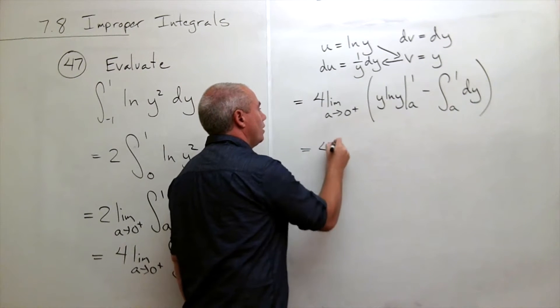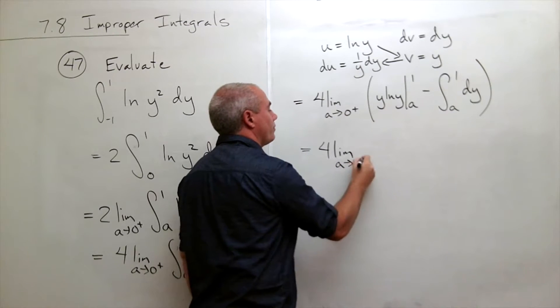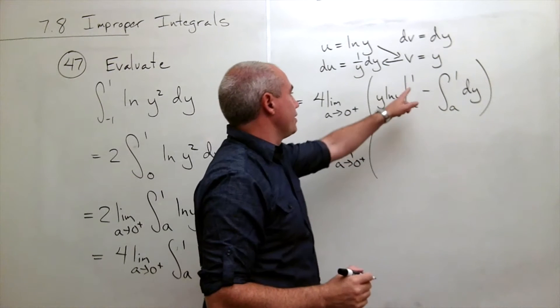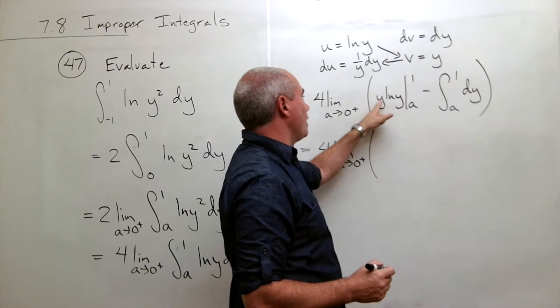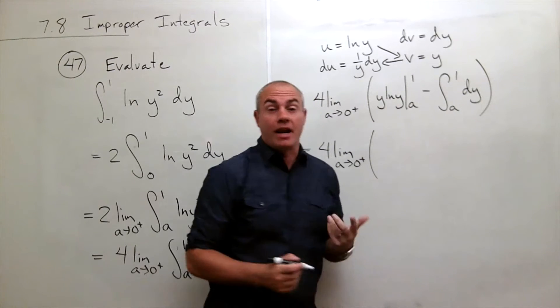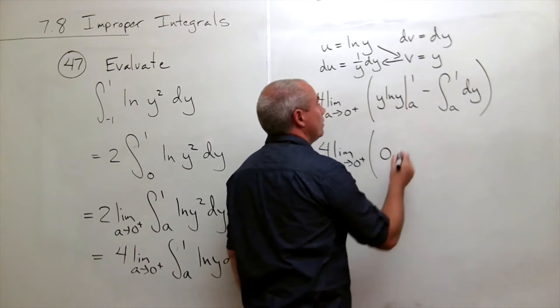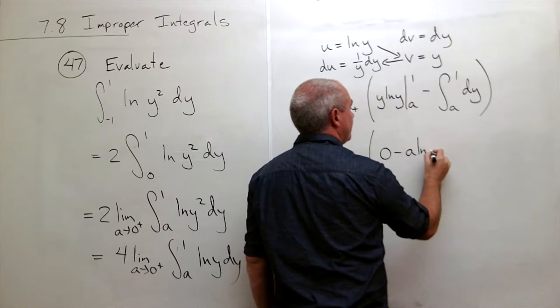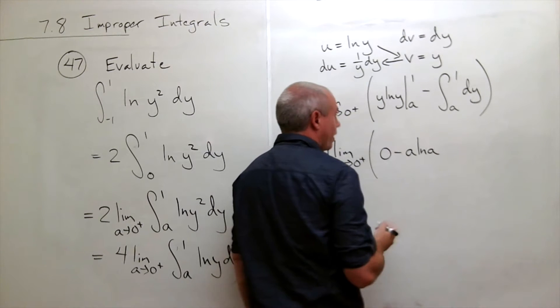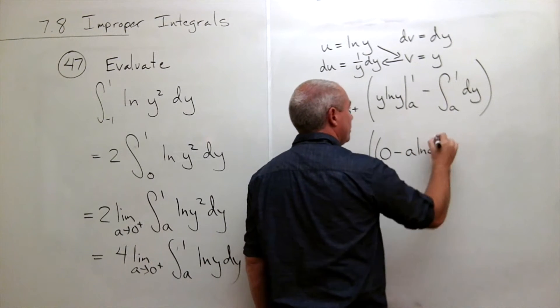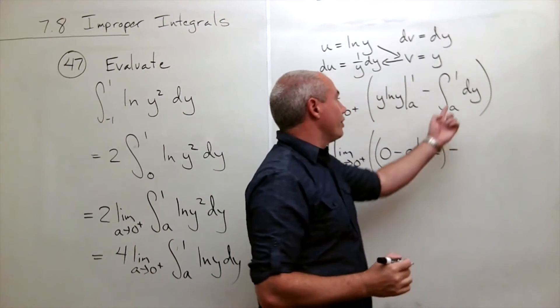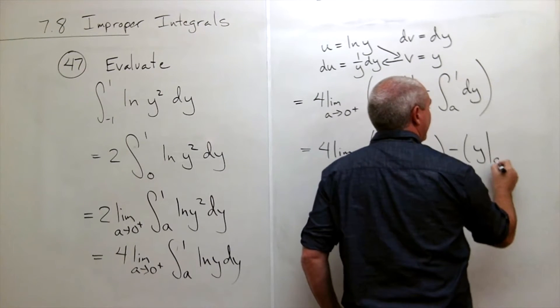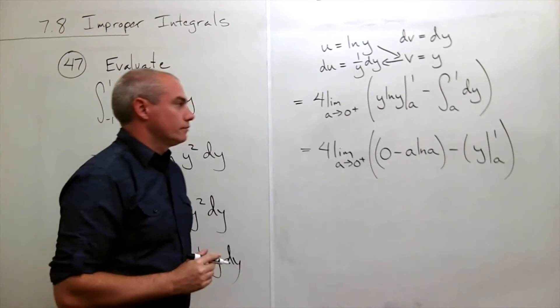Let's rewrite. I have 4 times the limit as a goes to 0 from the right of, now I can plug things in on this one. If I plug in 1, I get 1 times ln of 1. But ln of 1 of course is 0 so that's just 0 minus, if I plug in a, I get a ln a. The antiderivative of 1 of course is just y, so that's y evaluated from a to 1.